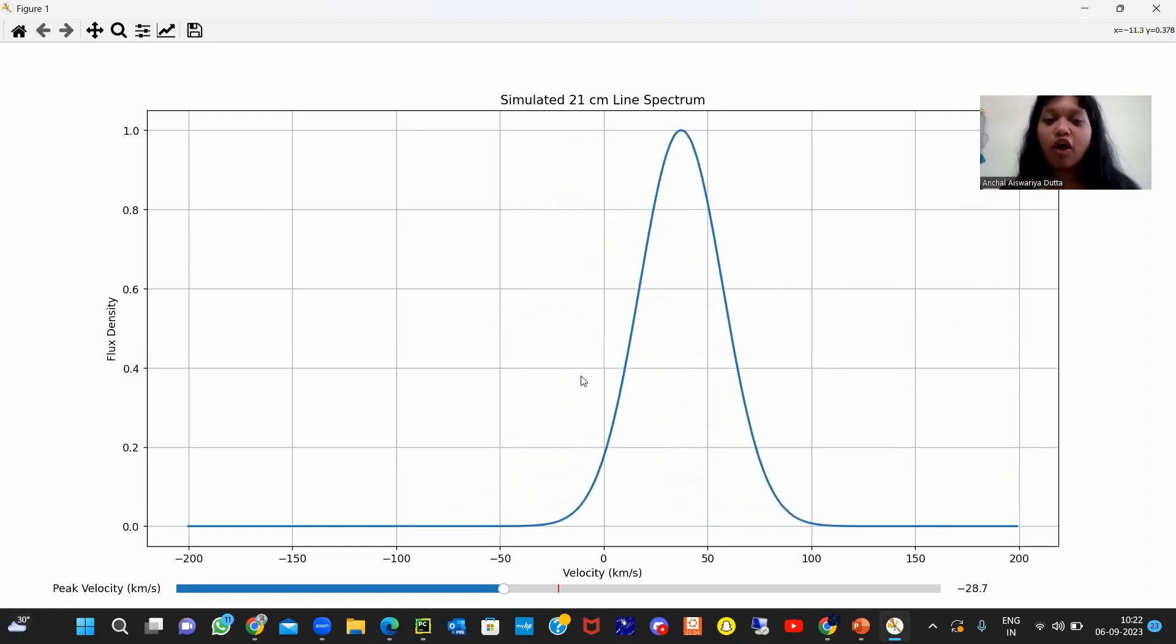Now coming to the interactive exploration part. By moving the sliders, you can change the central velocity of the spectral line, which I have told earlier. It is going forward, right? If I make it backward, it will come backward. So it is following my direction. The slider is also put to make you interactive and make you know how it is done.